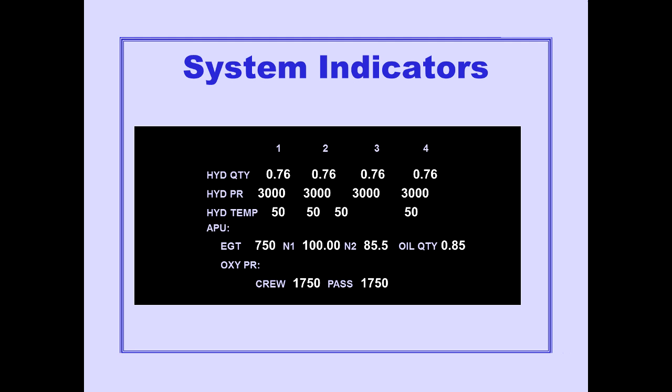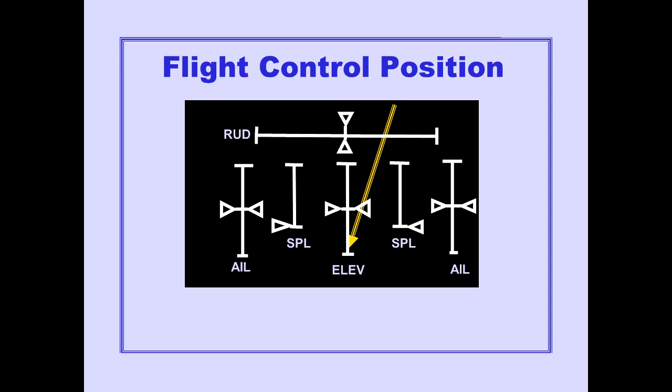System indicators are displayed in the upper half of the status display. Flight control positions for rudder, elevator, aileron, and spoiler positions are shown on the status display.